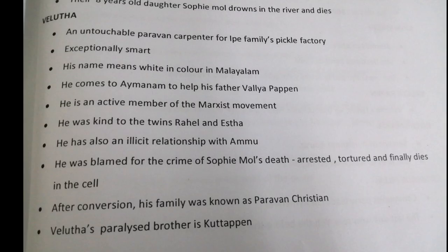Next character: Velutha. An untouchable Paravan carpenter for the family's pickle factory. Exceptionally smart, his name means 'white' in Malayalam. He comes to Aymanam to help his father, Velia Poppen. He is an active member of the Marxist Communist Party. He was kind to the twins Rahel and Estha, and also had an illicit relationship with Ammu. He was blamed for the crime of Sophie Mol's death, arrested, tortured, and finally dies in the cell. After conversion, his family was known as Paravan Christian.